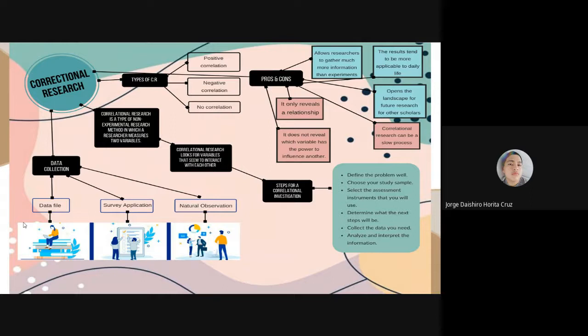Correlational research is a type of non-experimental research method in which a researcher measures two variables, understands and evaluates the statistical relationship between them without the influence of any foreign variable. This is essentially what correlational research does, make a relationship between two variables.